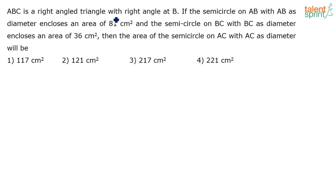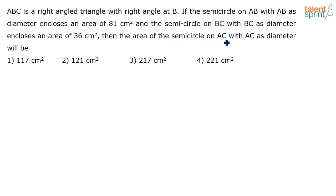ABC is a right angle triangle with right angle at B. The semicircle on AB with AB as diameter encloses an area of 81 centimeter squared, and the semicircle on BC with BC as diameter encloses an area of 36 centimeter squared. Then the area of the semicircle on AC with AC as diameter will be what?